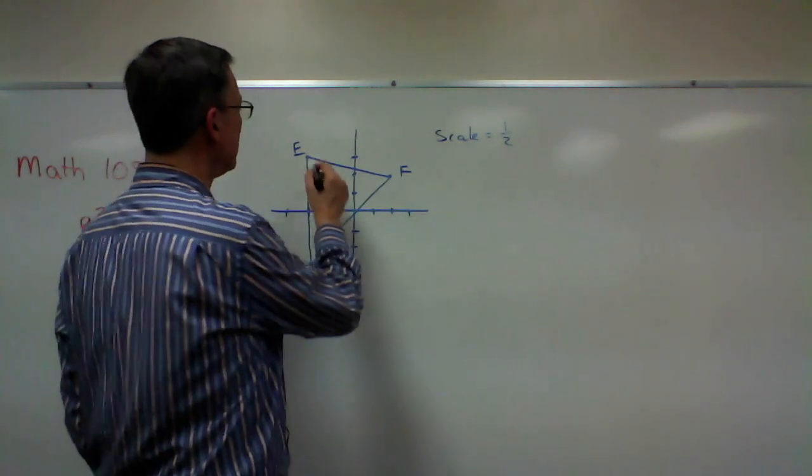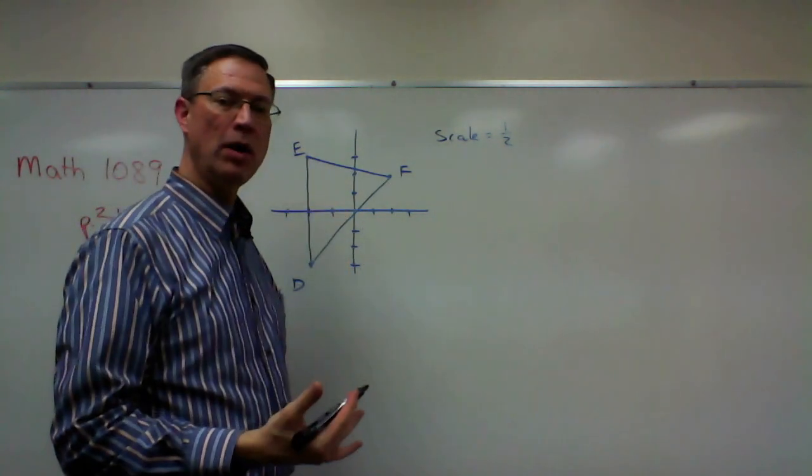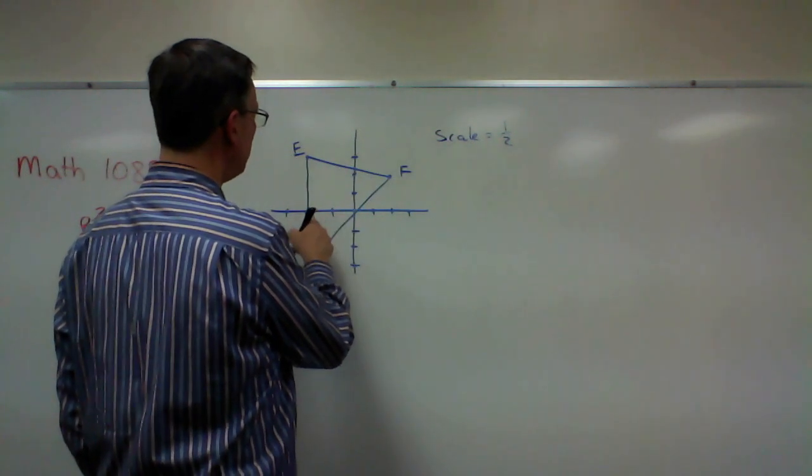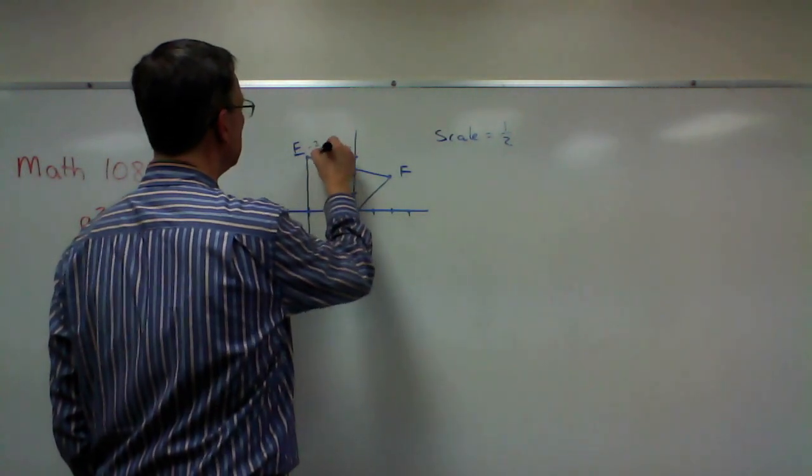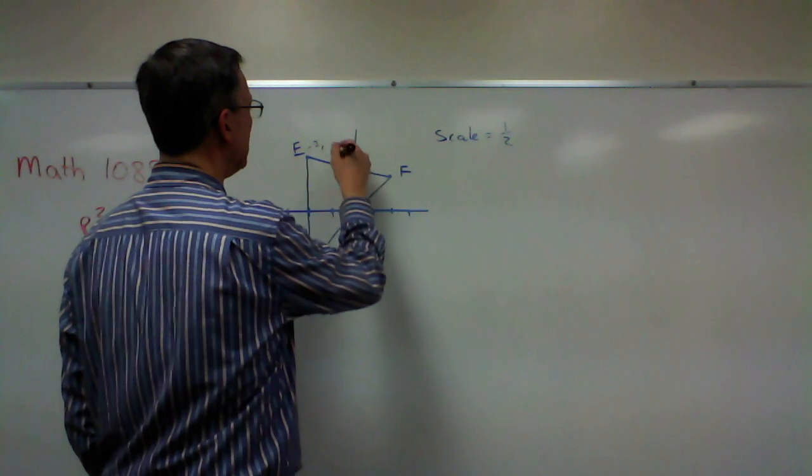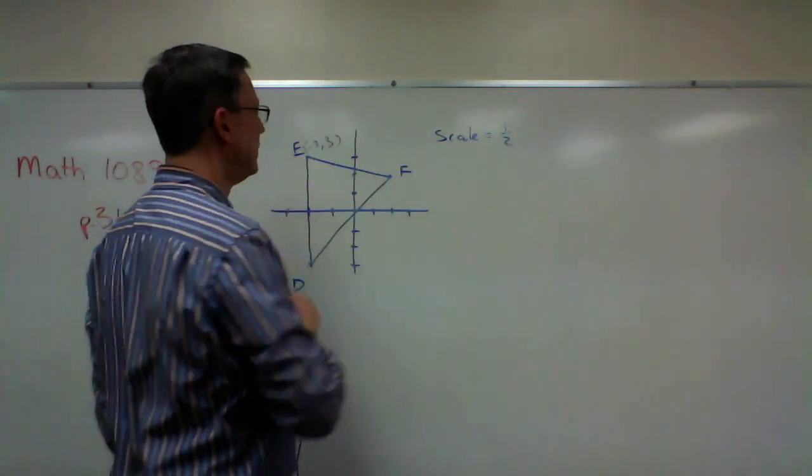So we need to first look at each of these points and say, what are the coordinates of that point? So this point here is negative two, and then it's up here at three. Negative two, three.